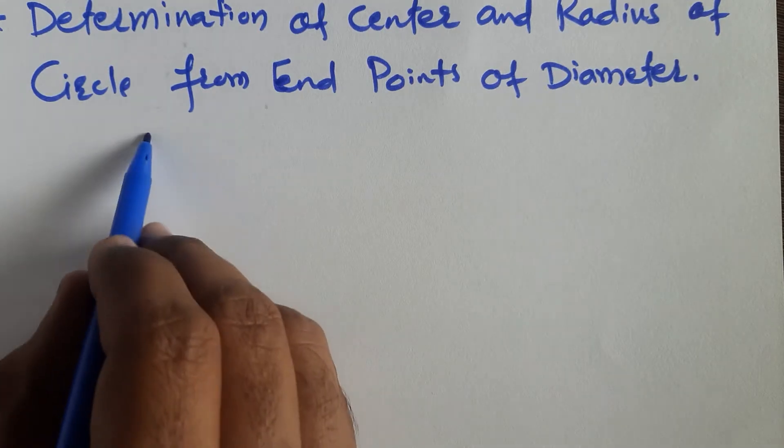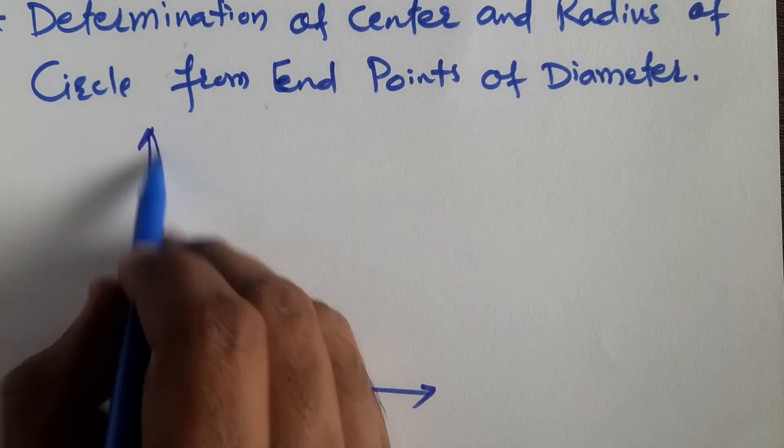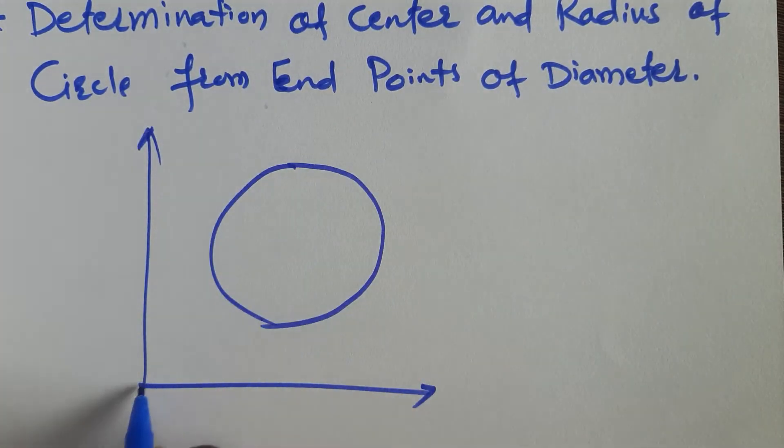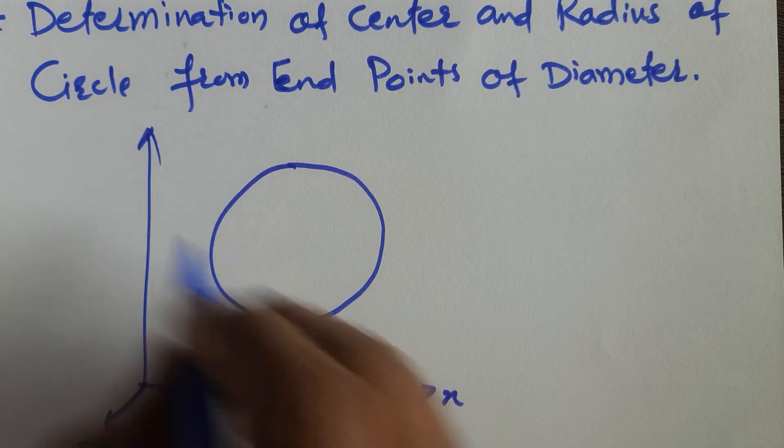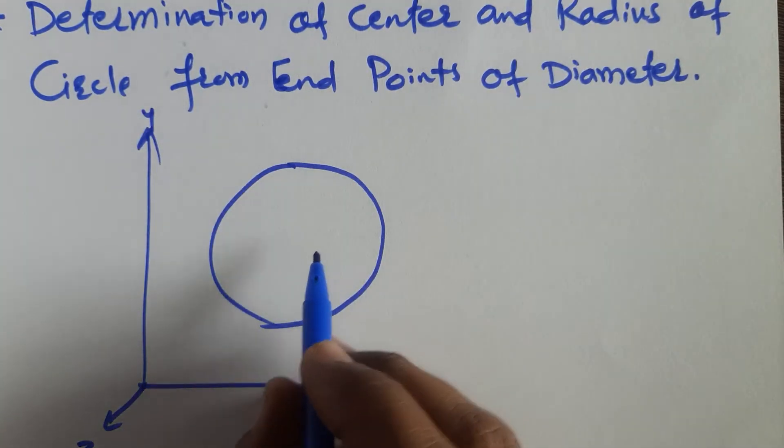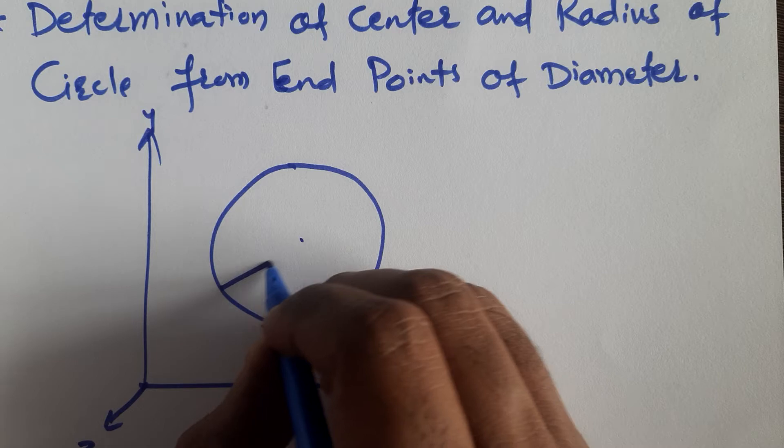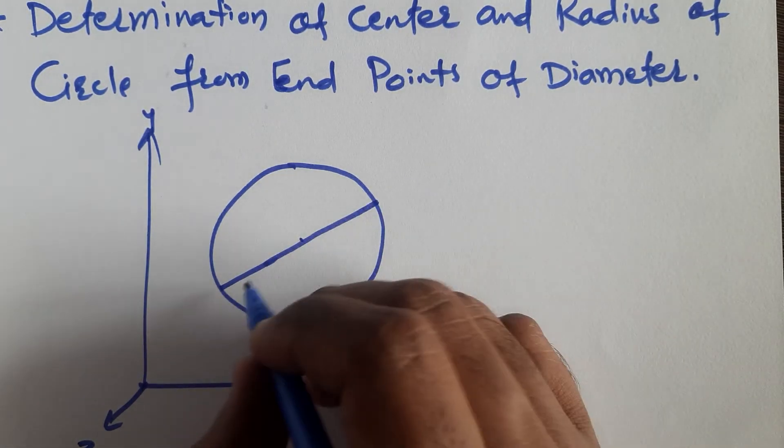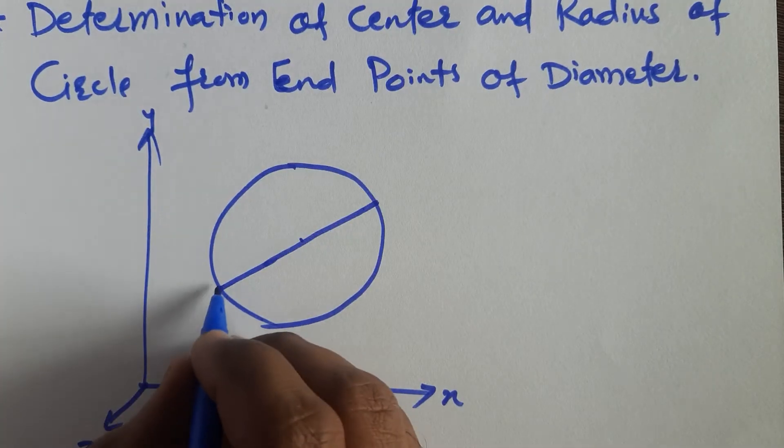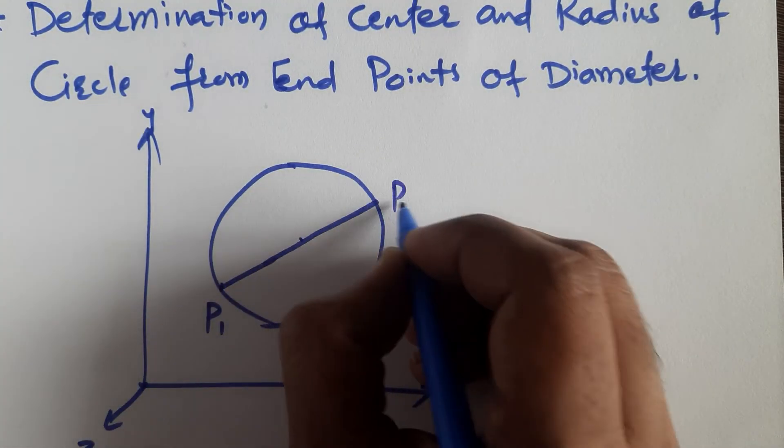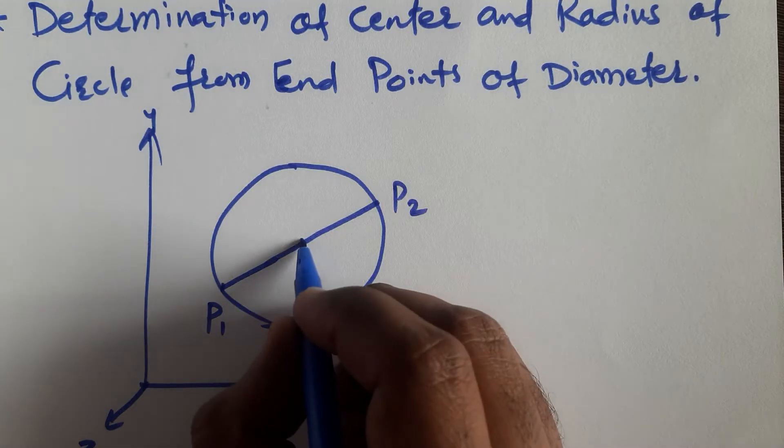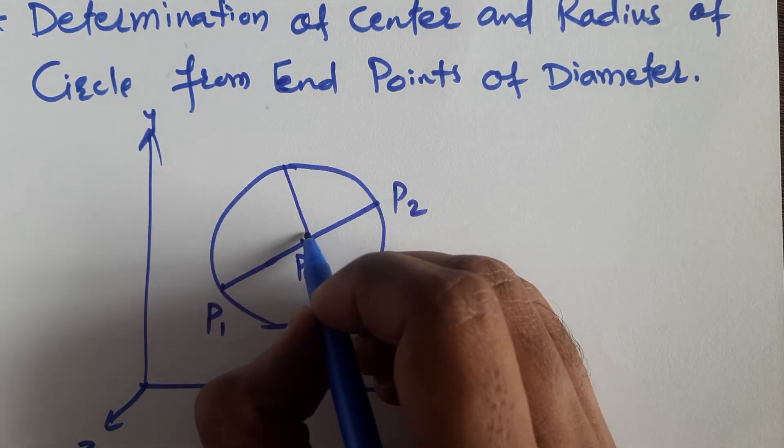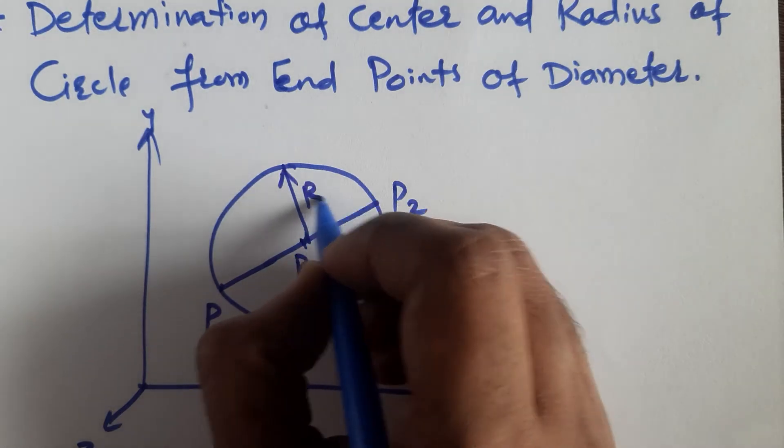For example, this is a circle with x, y, z coordinates. And here this is the diameter of the circle. P1 and P2 are coordinates which are given, and here Pc we need to find and radius we need to find. So this is radius of the circle.